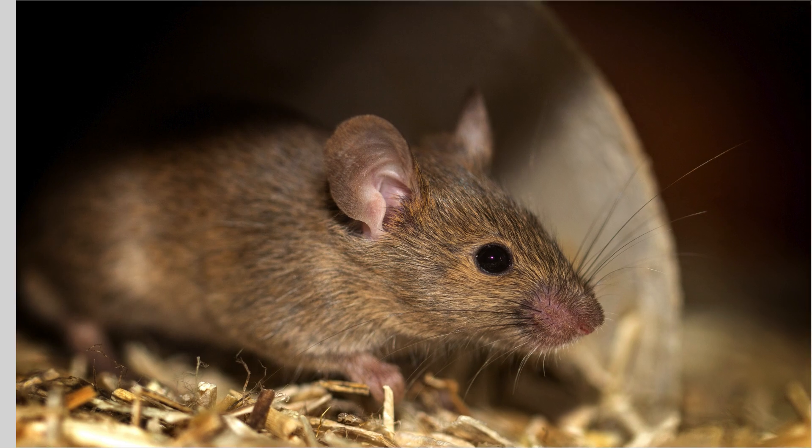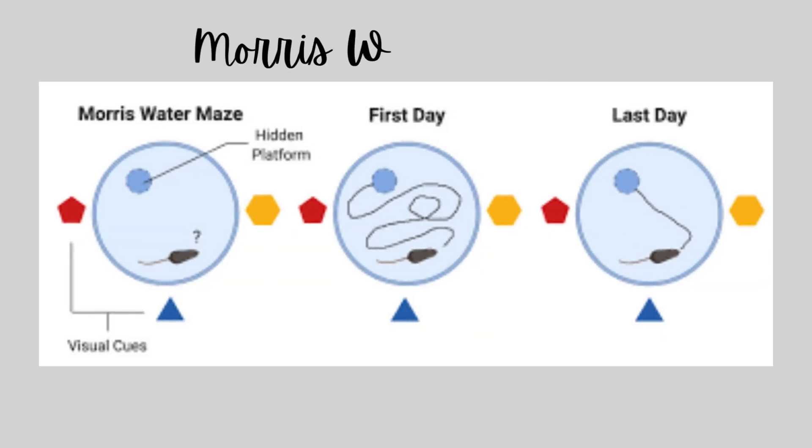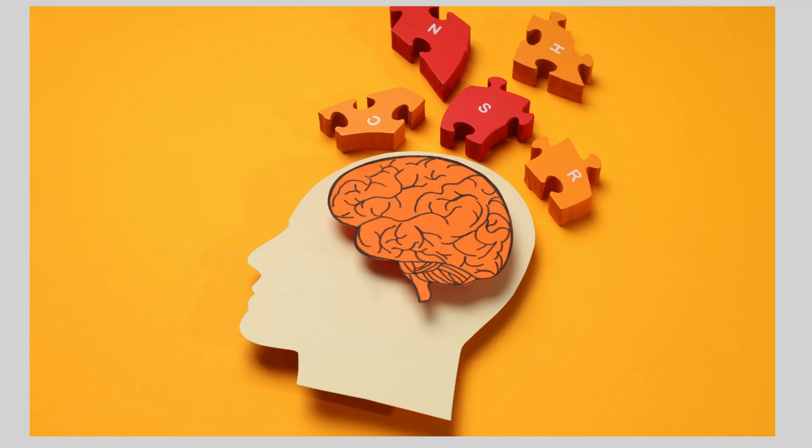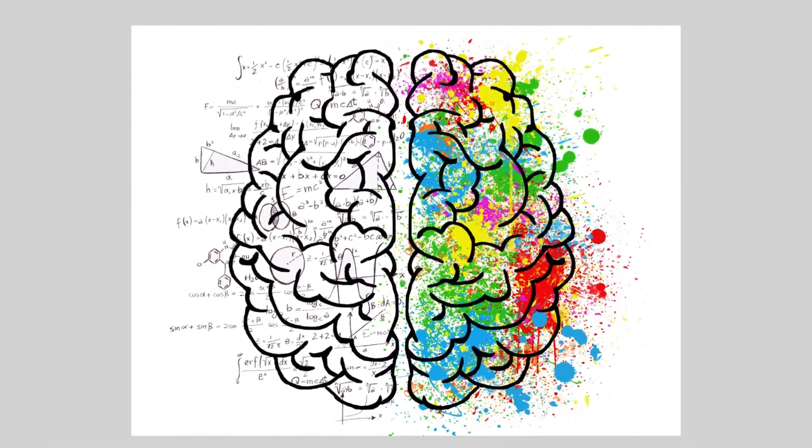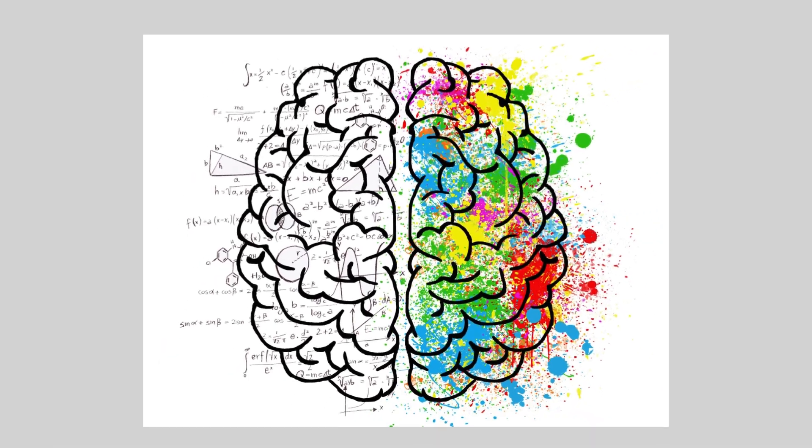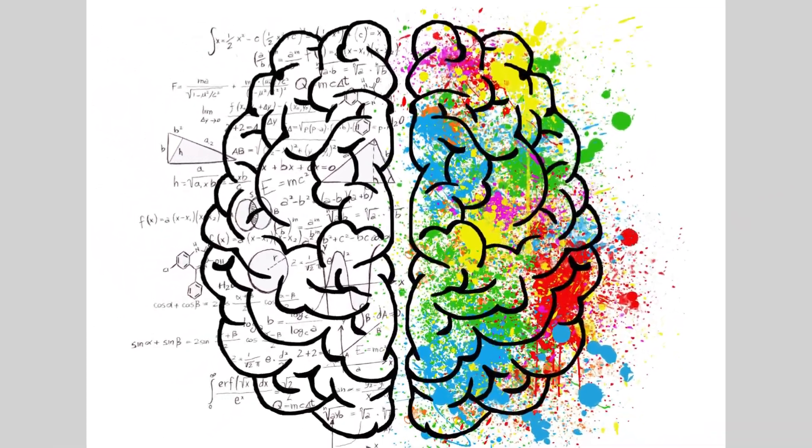D. Morris water maze: Purpose - this test is used to evaluate spatial memory and learning in rodents. Method - animals are placed in a pool of water where they must find a hidden platform to escape. Over time, the animal's ability to find the platform improves, which reflects its memory and learning abilities. Application - nootropics, memory-enhancing drugs, and treatments for neurodegenerative diseases like Alzheimer's are tested using this model.